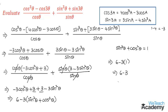Therefore, the value of cos³θ minus cos 3θ divided by cos θ, plus sin³θ plus sin 3θ divided by sin θ, equals 3. Remember the important formulas: cos 3a = 4cos³a minus 3cos a, and sin 3a = 3sin a minus 4sin³a. These are very important for solving further examples. Hope you understood the concept. Refer to more videos on trigonometry at vtchacademy.com. Thanks for watching, have a nice day.